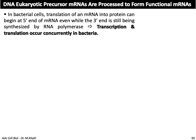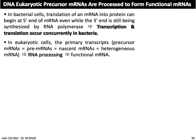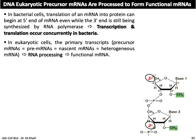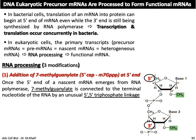Eukaryotic precursor messenger RNA must be processed to form a functional messenger RNA. In bacterial cells, translation of messenger RNA into protein can begin at the 5' end of the mRNA even while the 3' end is still being synthesized, meaning transcription and translation occur concurrently in bacteria. In eukaryotes, the primary transcript — also called pre-mRNA or nascent mRNA — must undergo RNA processing to form a functional RNA. RNA processing has three modifications, the first being the addition of a 7-methylguanylate 5' cap (m7G) at the 5' end.